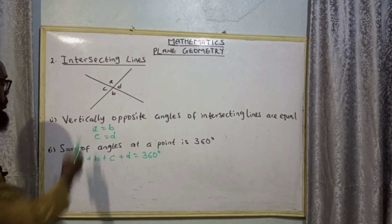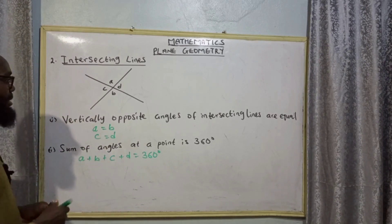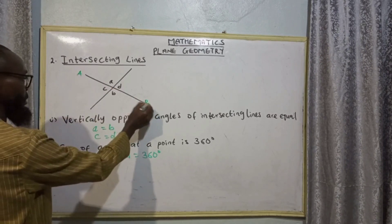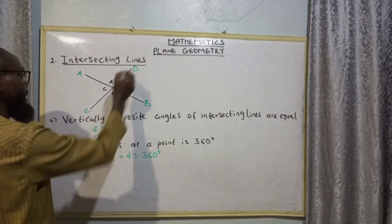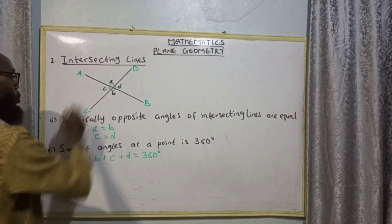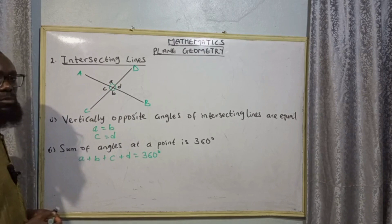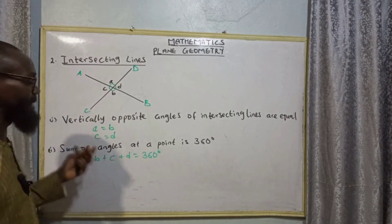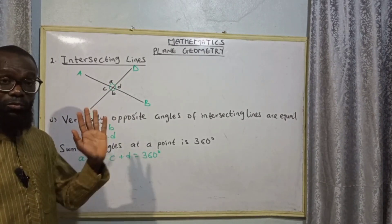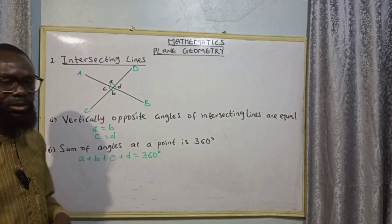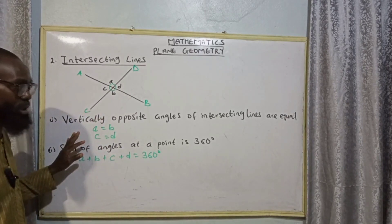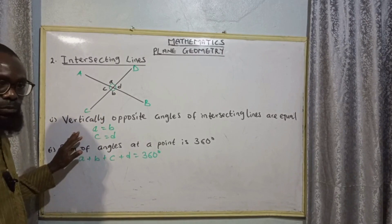When two lines cross over each other, we say they are intersecting. Let's look at this particular line — let's call this line A, B, C, and D, intersecting at point O. So when we have intersecting lines, two theorems can come from it. One: vertically opposite angles of intersecting lines are equal.